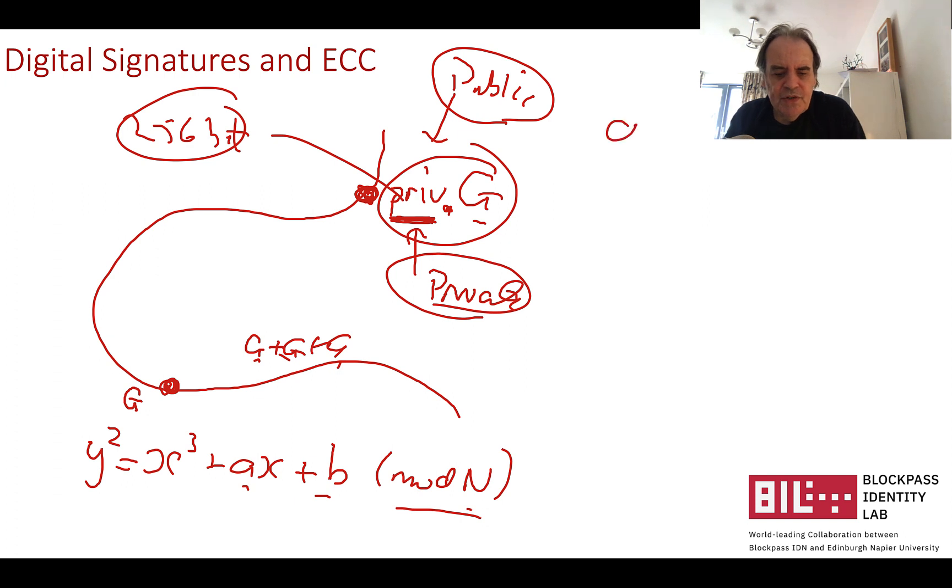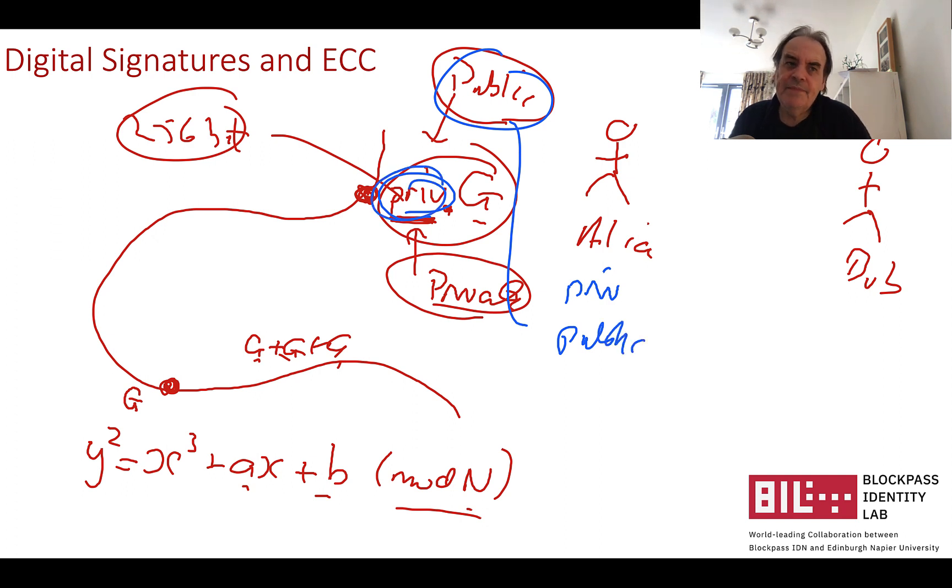So when it comes to signatures, if we take Alice and Bob, then Alice has a private key and she also has a public key. As we saw, that's the private key, a 256 bit random value, and she has a public key which is that private value multiplied by G or added those many times. So when she takes a message, she wants to sign it with her private key.